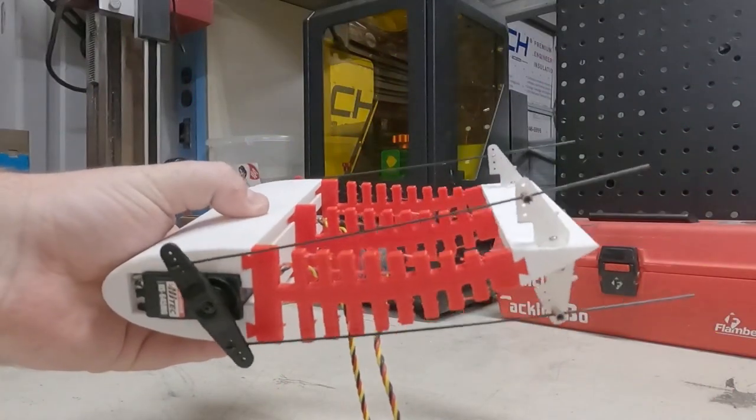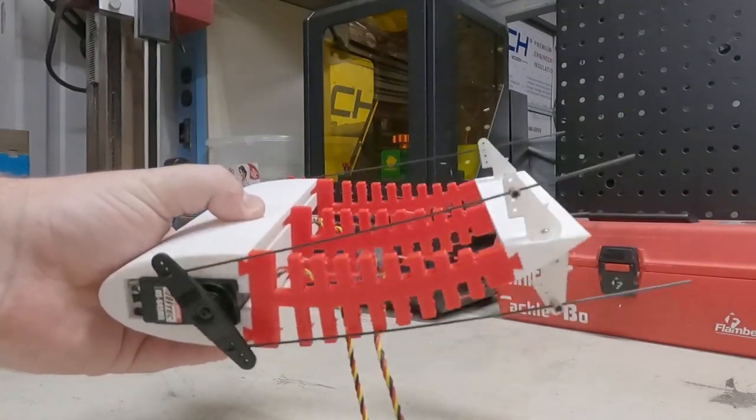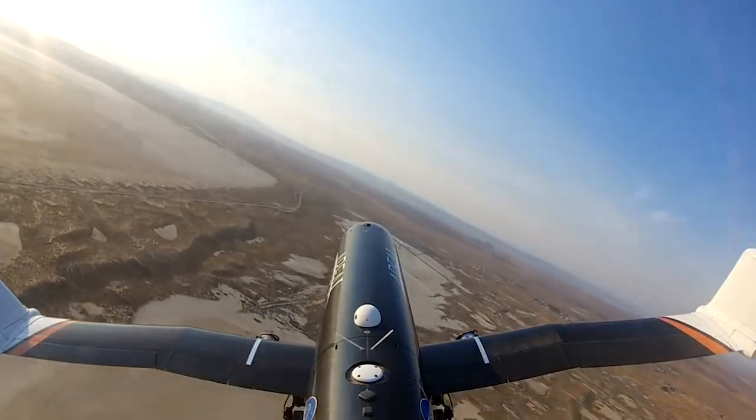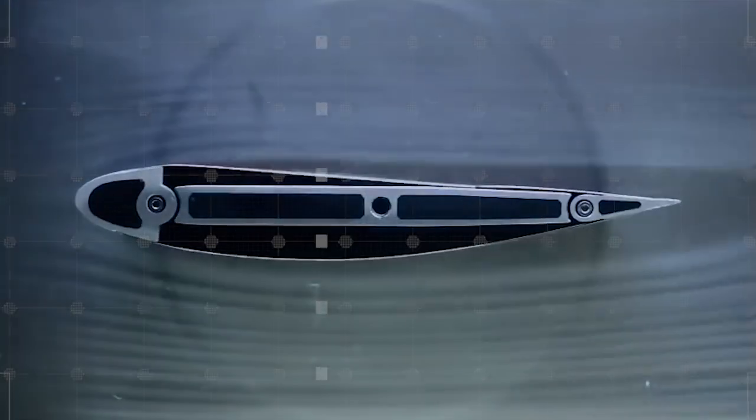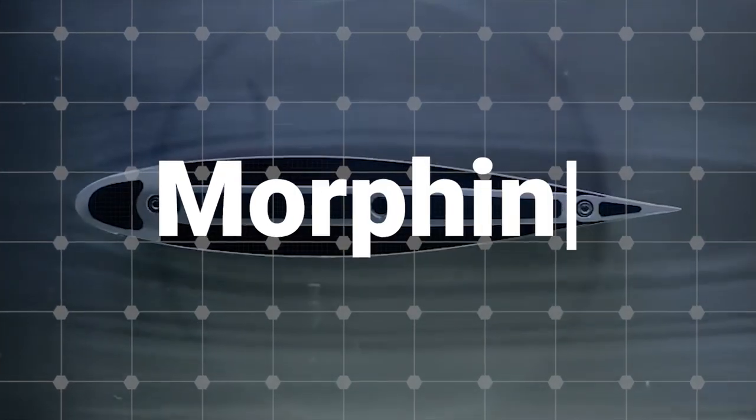In this video, we'll delve into the fascinating concept of metamorphic wings. Metamorphic wings are a type of airplane wing that can change shape to control the plane's flight. They're also known as adaptive, morphing, or shifting wings.